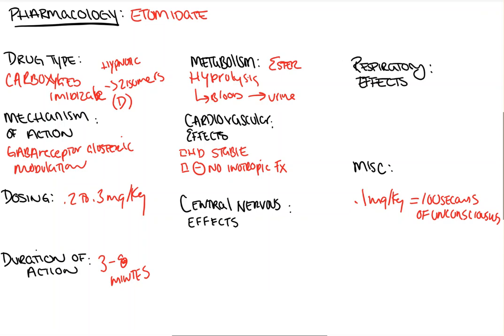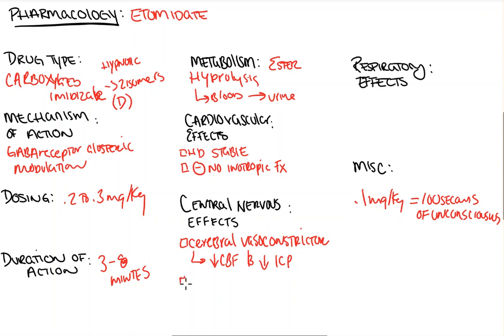Next, on to the central nervous system, where etomidate — unlike propofol — is a cerebral vasoconstrictor, as opposed to propofol which is a cerebral vasodilator. This leads to a drop in cerebral blood flow as well as a drop in ICP. One of the big important things that may come up, especially on exams, is that it can induce seizures or at the very least lower the seizure threshold, and it may even potentiate them.